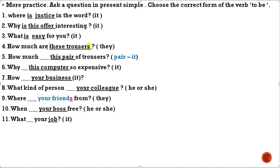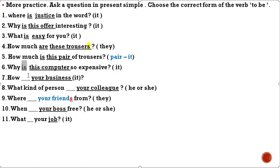'How much are these trousers?' And 'How much ___ this pair of trousers?' — 'pair' means 'it', we use 'is': 'How much is this pair of trousers?' 'Why ___ this computer so expensive?' — 'this computer' is 'it', we use 'is'. 'How ___ your business?' — 'your business' is 'it', we use 'is'. 'What kind of person ___ your colleague?' — 'your colleague' means 'he or she', we use 'is'.